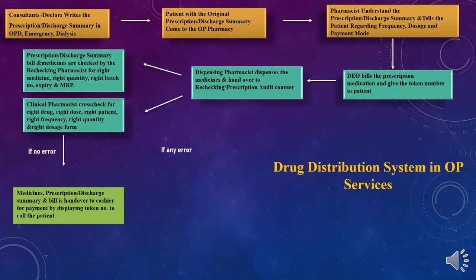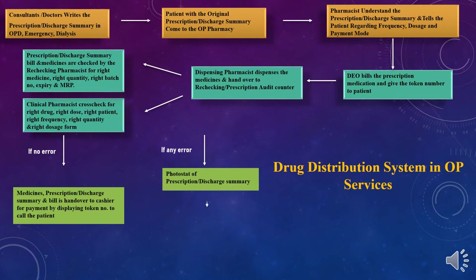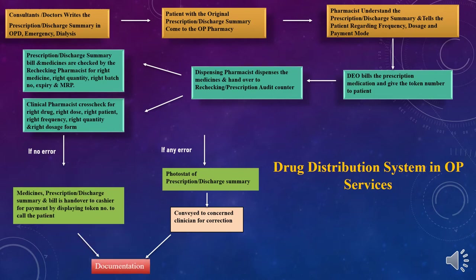If any error occurs during this procedure, the clinical pharmacist takes a photocopy of the prescription and discharge summary, then conveys the issue to the concerned clinician or physician for correction. After correction, documentation is done, and finally the medication is handed over to the patient. This is the overall process of the drug distribution system in OP services.